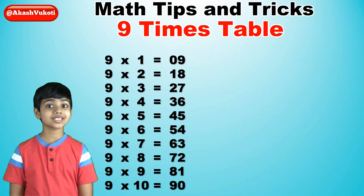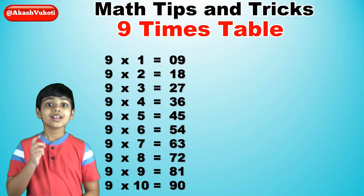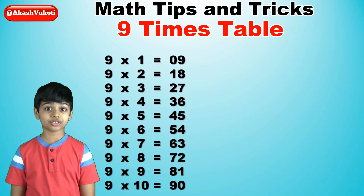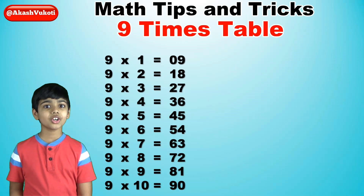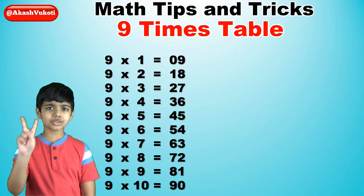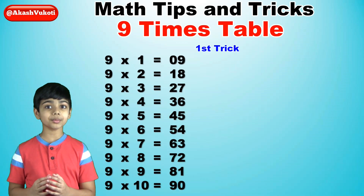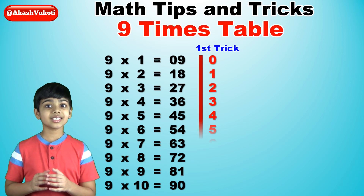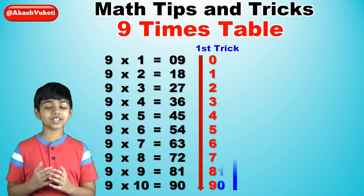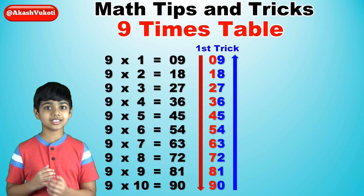Now I'm going to tell you how special the 9 times table is, so let's take a closer look. The first specialty is that if you look carefully, all of the products of the 9 times table can be read as 2 columns. The left column has all the numbers from 0 to 9 in ascending order, and the right column has all the numbers in reverse order from 9 to 0, as you can see right here.